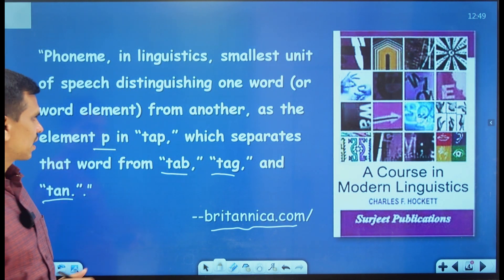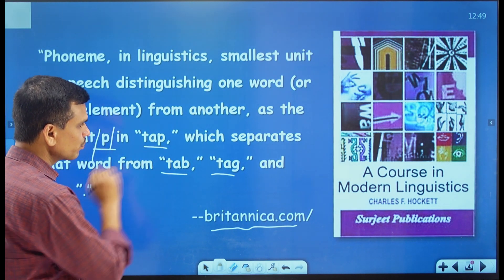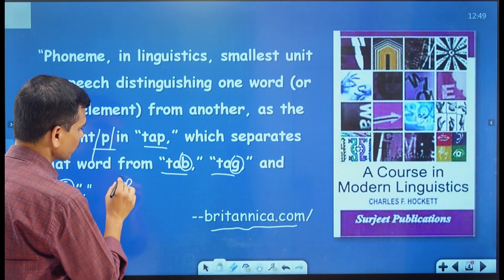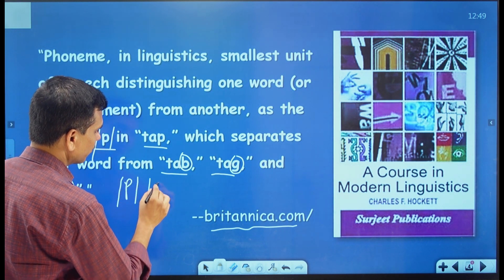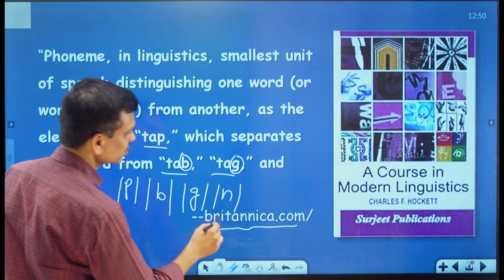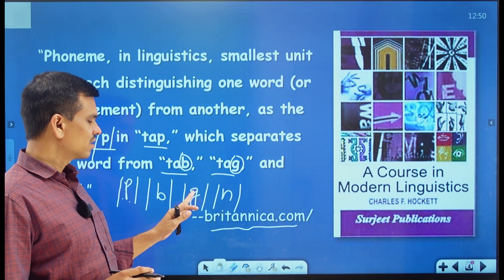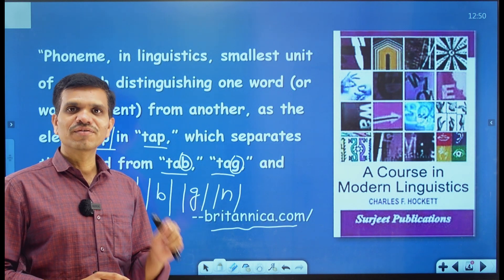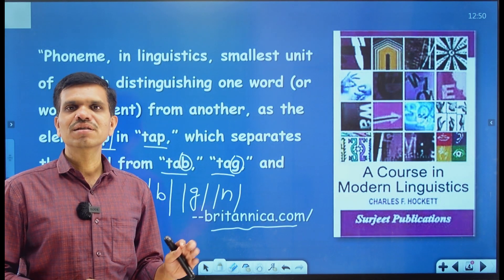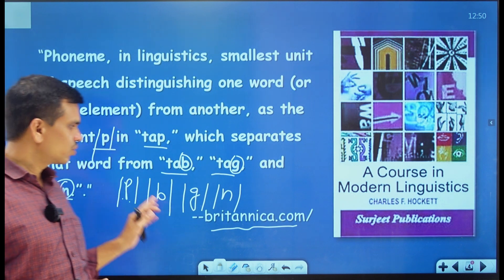Here we have a few examples: the /p/ sound, the /b/ sound, the /g/ sound, and the /n/ sound. We generally write these sounds in slanted lines. All these sounds — /p/, /b/, /g/, and /n/ — are distinct sounds, they are in contrast to one another. So /p/ is different from /b/, /b/ is different from /g/, and /g/ is different from /n/. All these sounds are called phonemes in English. It is nothing but the smallest unit of speech sound.